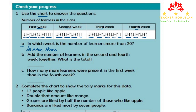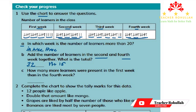In question B, it says: add the number of learners in the second and the fourth week together — what is the total? The number of learners in the second week is 17, and the number of learners in the fourth week is 15. So 17 plus 15 is 32. From 17, if you take 15 of it, 15 plus 15 is 30, and another 2 plus 30 is 32.